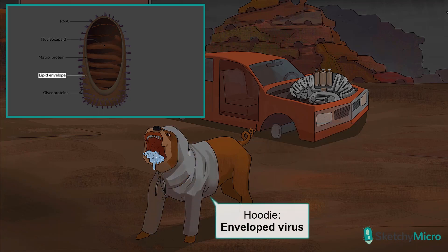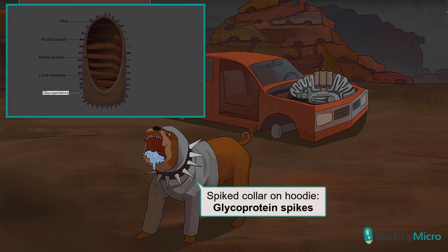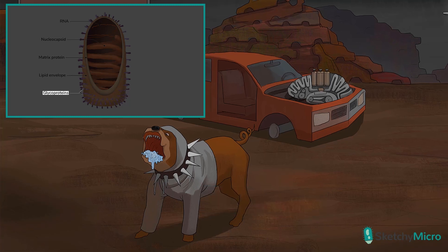Rhabdovirus is also an enveloped virus — it actually acquires an envelope when it buds from the host cell. So we'll draw a white hoodie for our dog to stay nice and cozy. And since no dog ensemble is complete without a statement dog collar, we're going to finish off our dog's look with a spiky choker. The rockstar spikes on his collar will help you remember that rabies' main viral protein is the envelope glycoprotein, a spiky-looking protein that actually allows the virus to attach to the host cell.